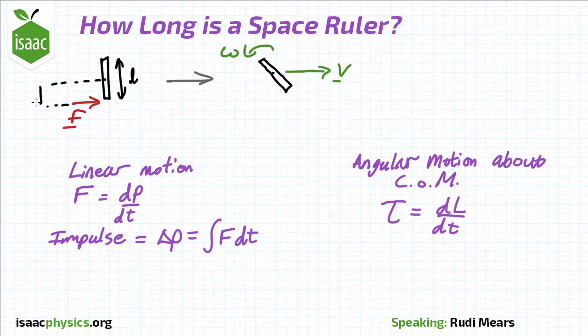The force F is applied at a distance L/2 away from the center of mass, and the torque is therefore related to F by τ equals F times L/2. In the same way that we found the impulse, we can use the angular equivalent of Newton's second law to write that the change in angular momentum, ΔL, is equal to L/2 times the integral of F dt.